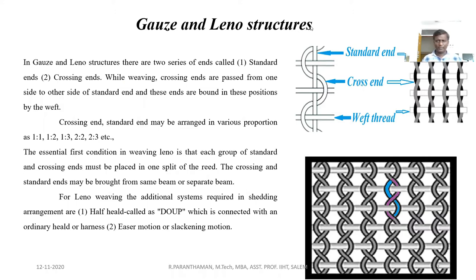The warp thread is bound by the standard end and the crossing end at its crossover points. The crossing and standard ends may be arranged in various proportions like one to one, one to two, one to three, two to two, two to three, etc. The crossing end and standard ends may be drawn from a single beam or separate beams.